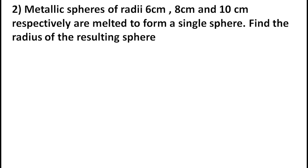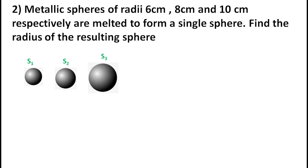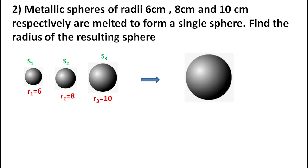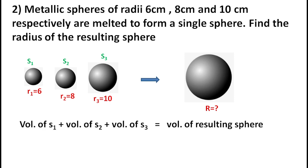Question 2: Metallic spheres of radii 6 cm, 8 cm, and 10 cm respectively are melted to form a single sphere. Find the radius of the resulting sphere. There are 3 spheres — let's call them S1, S2, and S3. The volume of the resulting sphere equals the sum of the volumes of the three spheres.